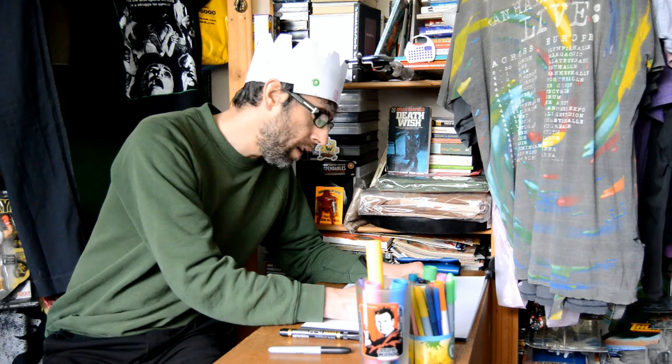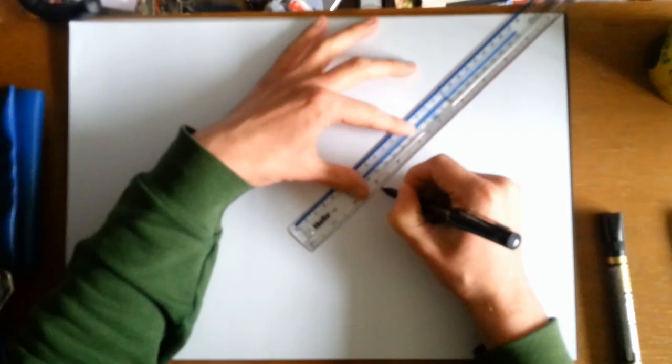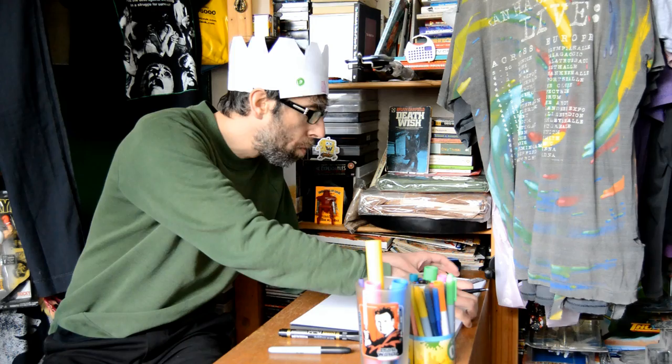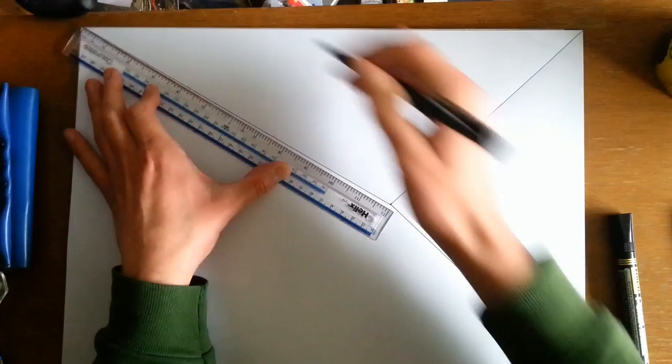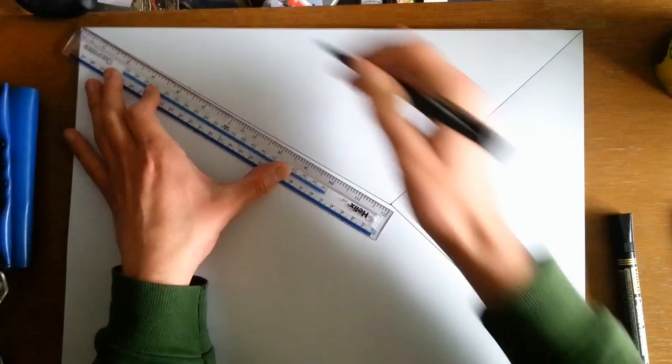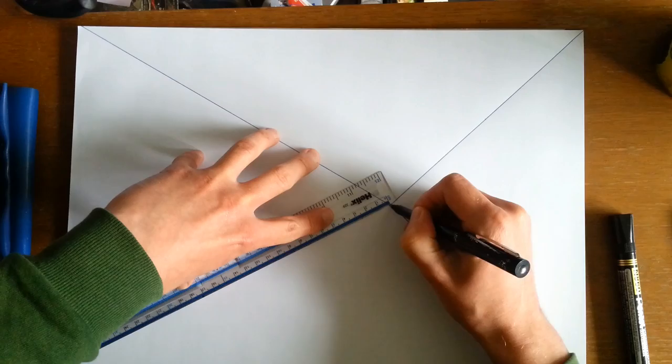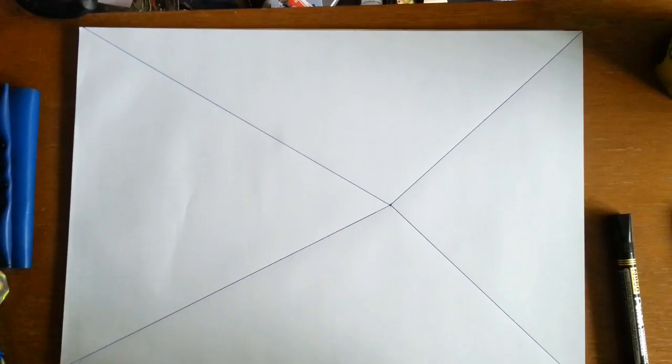Then literally just get your ruler and make it go to the corners of the paper. Normally this would be done in pencil, but we're using nice strong lines so it shows up on camera. Do all four corners of the page so it's even. And there you go, there's your perspective lines.